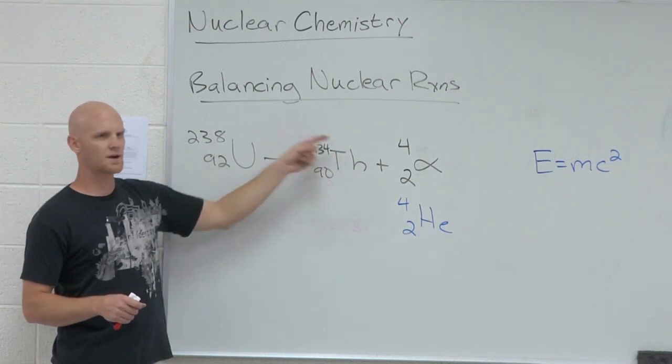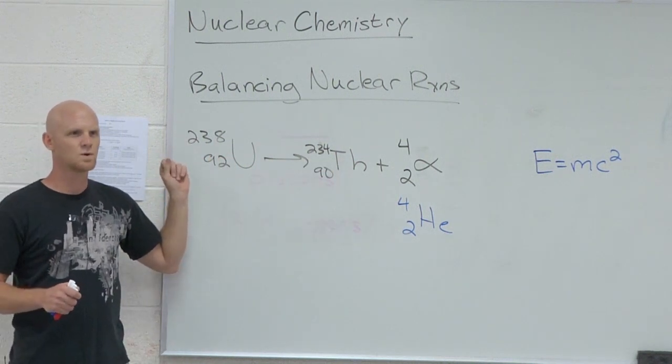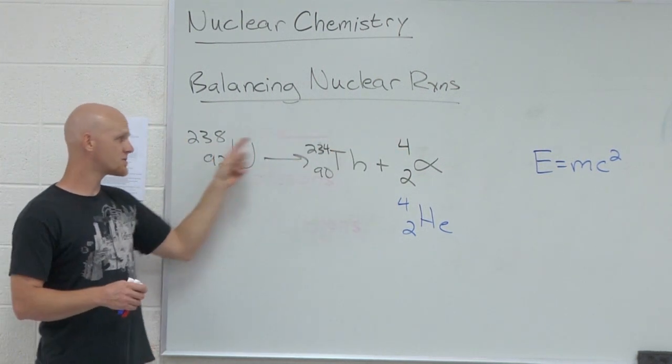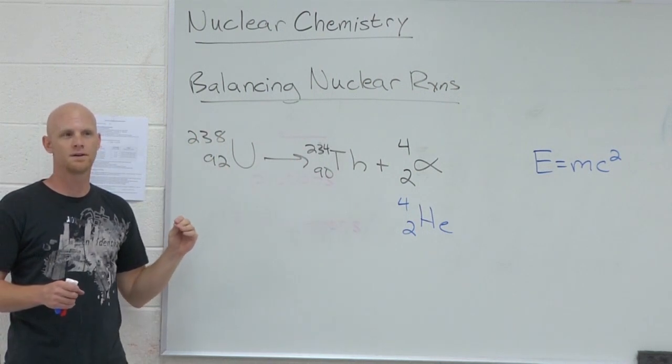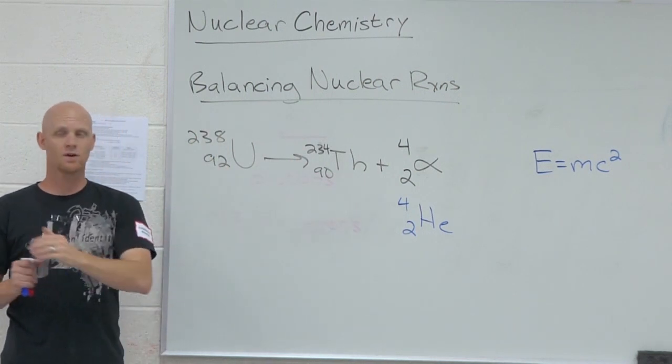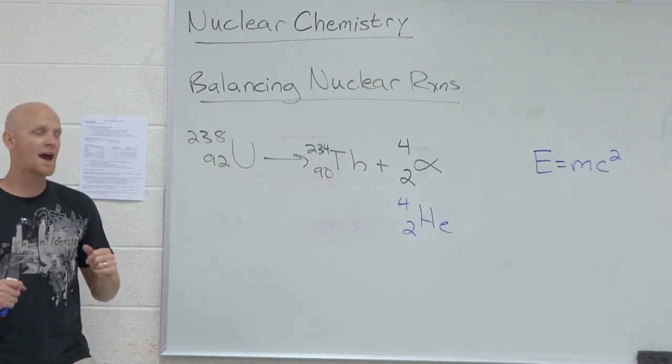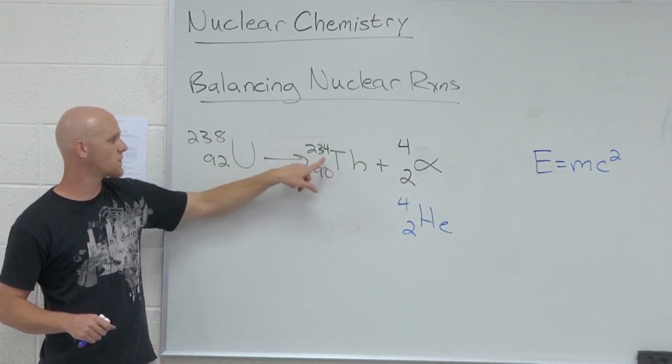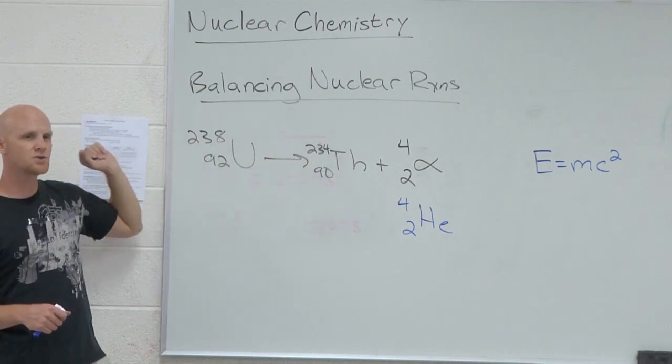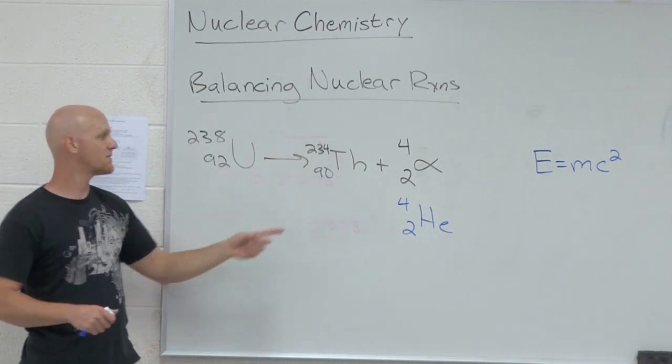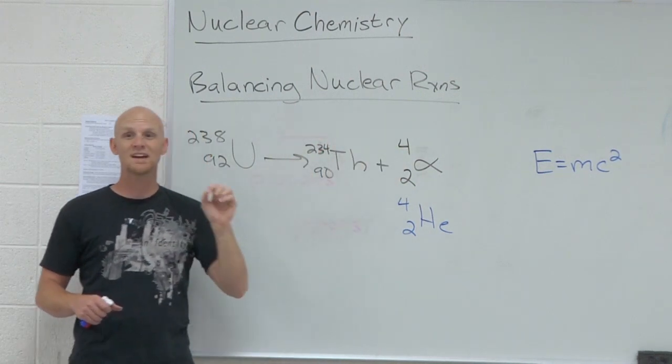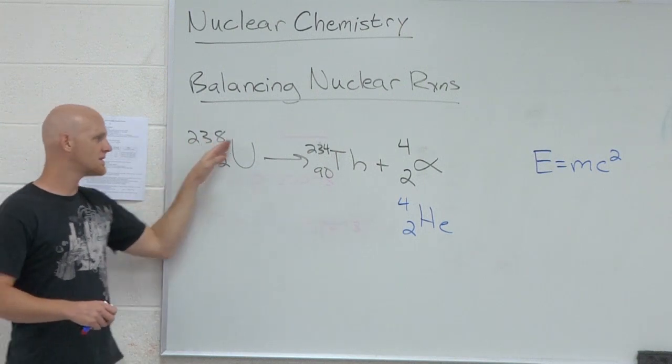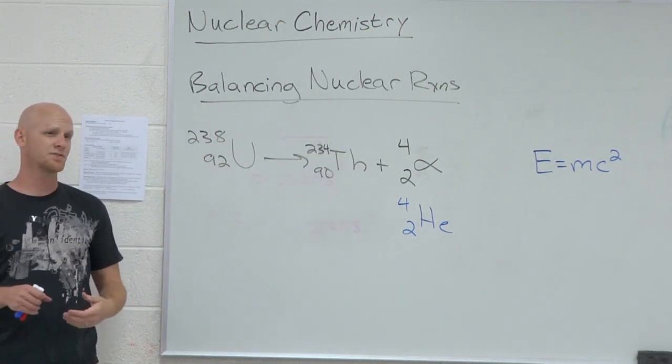But where did I lose the mass? Well, if you notice, these are rounded to the nearest whole number, right? And the mass numbers are always going to balance, but they're rounded to the nearest whole number. The exact masses, we can carry those out to like seven or eight decimal places. If you were to actually have the exact mass of an alpha particle, the exact mass of this thorium-234 nucleus, and the exact mass of this uranium-238 nucleus, you'd find out that the products do really weigh a teeny, teeny, teeny, tiny bit less than the reactant did. So you don't notice it in the mass numbers themselves, but if you have the exact masses, that's where you'll see it.